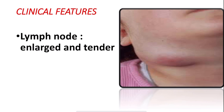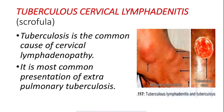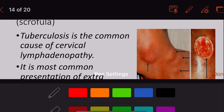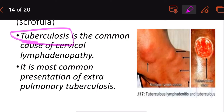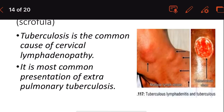The second type is tubercular cervical lymphadenitis, also known as scrofula. Tuberculosis is the commonest cause of cervical lymphadenopathy. It is the most common presentation of extrapulmonary tuberculosis — meaning in cases of TB outside the lungs, cervical lymphadenopathy will be present. The patients are often children and young adults who are asymptomatic and show no evidence of active tuberculosis.